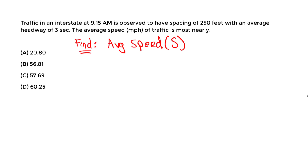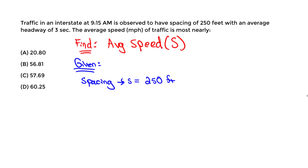We're given a few things. First, it's 9:15 AM — that's irrelevant; they just took the data at that time. So we have spacing of 250 feet. Spacing is a very important parameter in traffic stream or flow analysis. Spacing is denoted by lowercase s and equals 250 feet. Then the headway — the average headway — is a time, not a distance. Headway is always a time, measured in seconds.